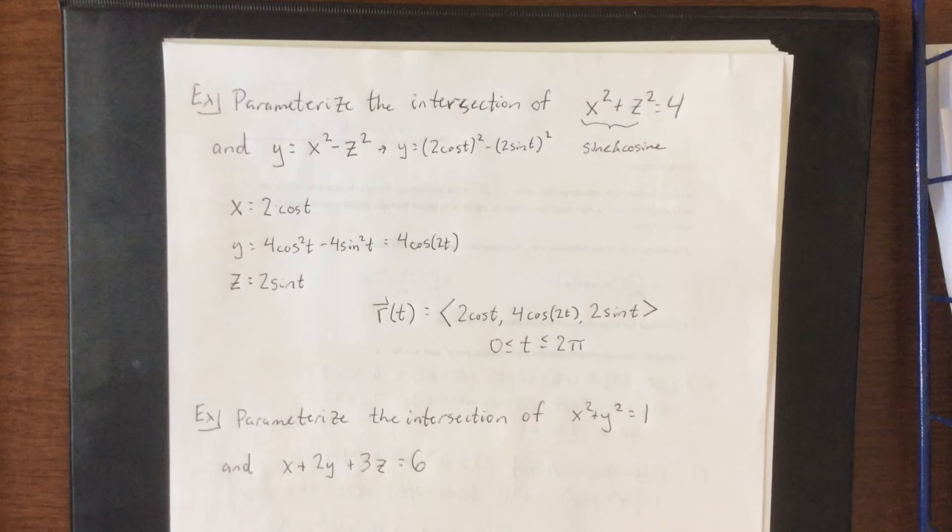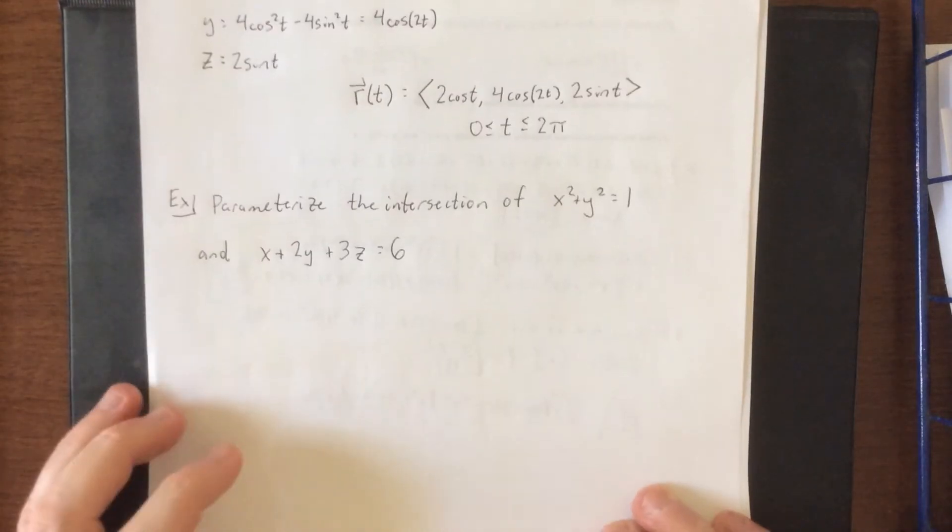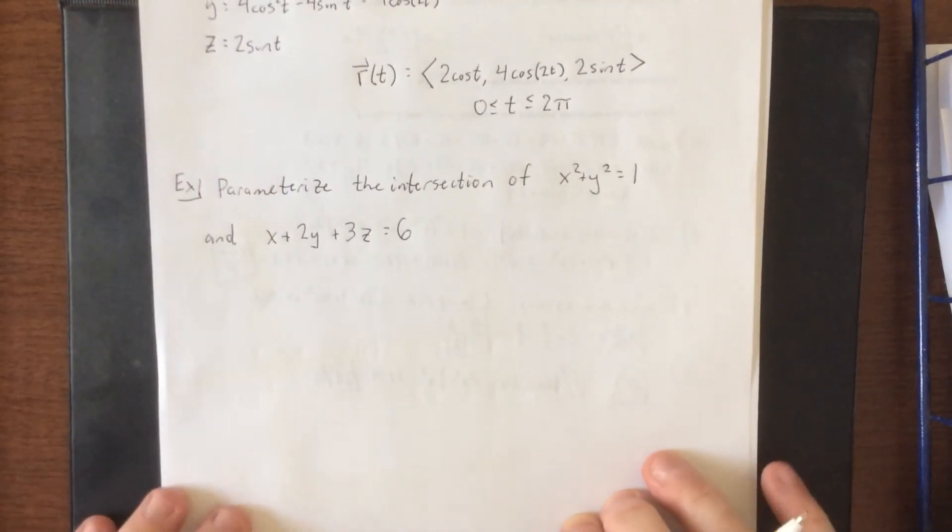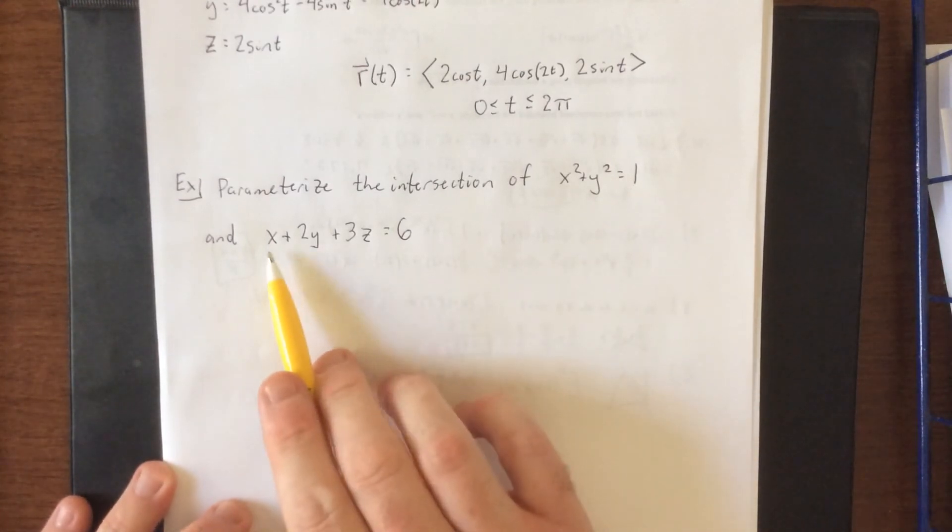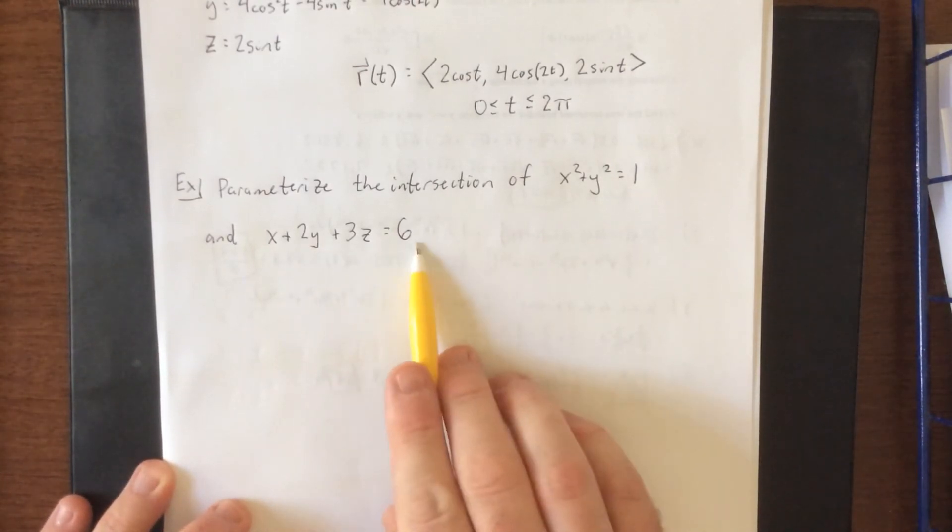For our last example, we're going to take the intersection of the right circular cylinder x squared plus y squared equals one, and the plane x plus 2y plus 3z is equal to six.